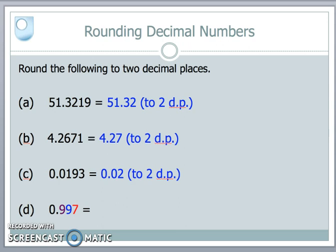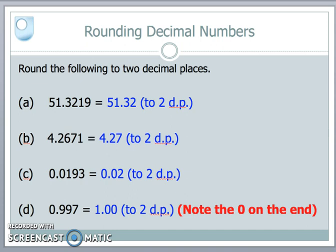But that becomes a 10. And that means I'll put another one onto the other nine. That becomes a 10. And so I'll get my final answer of being 1.00 to two decimal places.